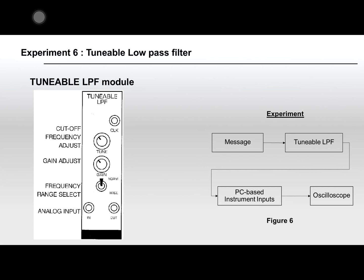The next module is the Multiplier Module, which allows you to do a multiplication between two signals. In the experiment, connect the circuit following figure four, then try to multiply your message with the carrier and see what you observe.